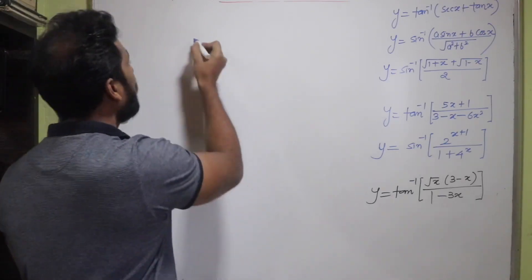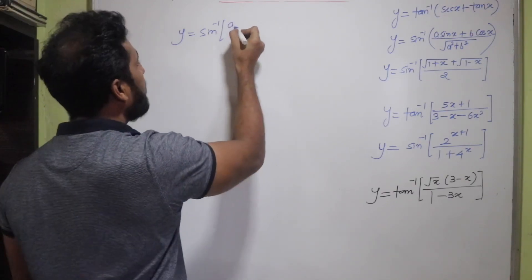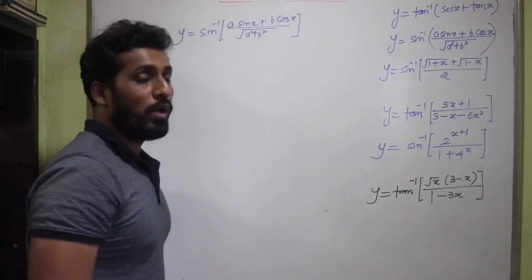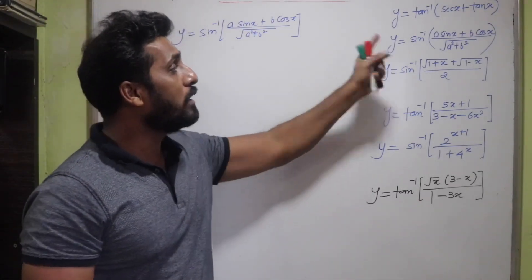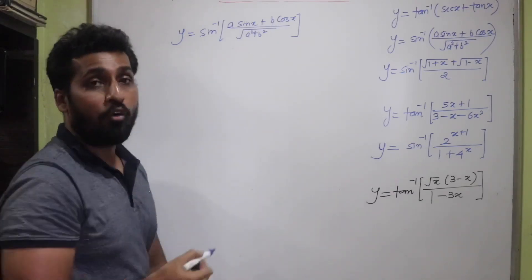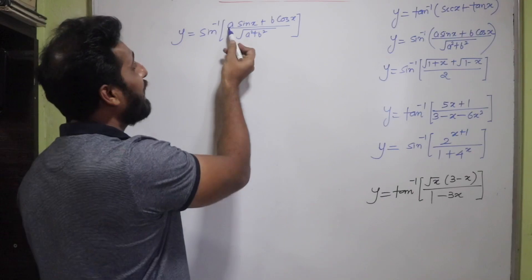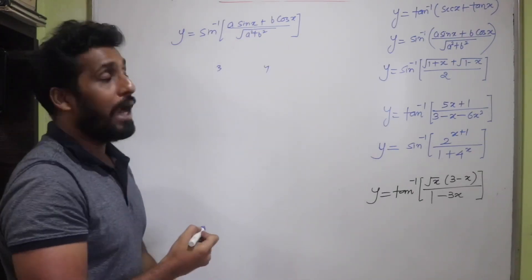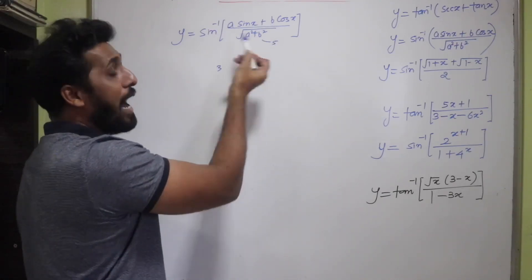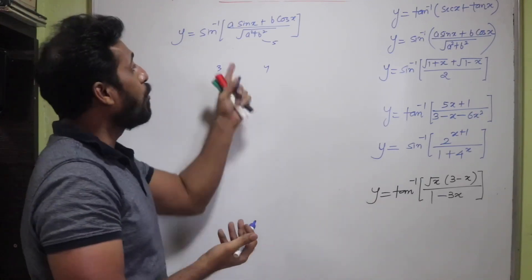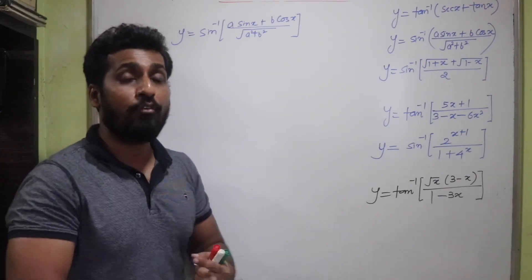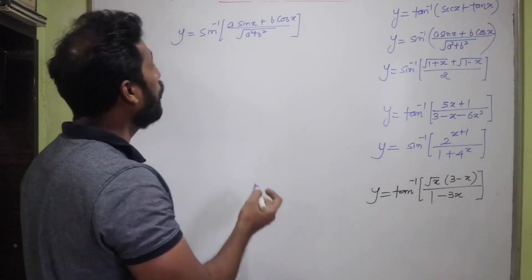The next question is y = sin⁻¹((a sin x + b cos x) / √(a²+b²)). This is an important type — more questions can be formed by changing values of a and b, for example a=3, b=4 gives √(9+16)=5. Understanding this one question covers the entire type.